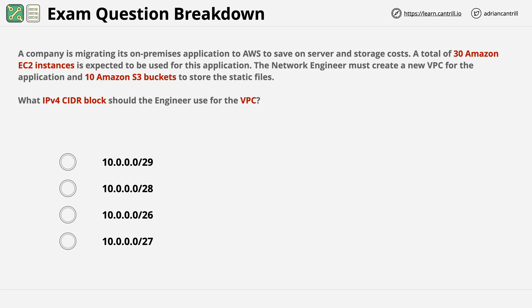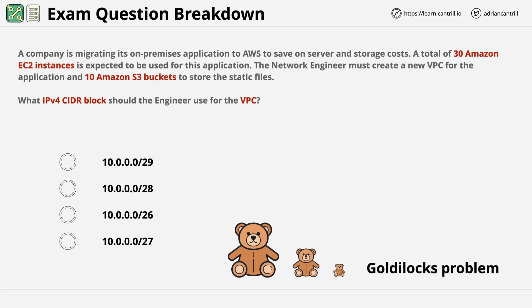This is a type of question I refer to as a Goldilocks problem. You might know the old children's story with three bears where the food is too hot or too cold, the chairs are too big or too small, and the beds are too soft or too firm. This question is all about picking the right-sized VPC for this requirement.